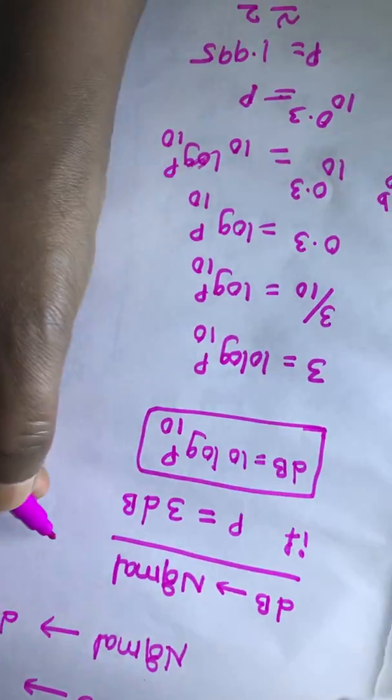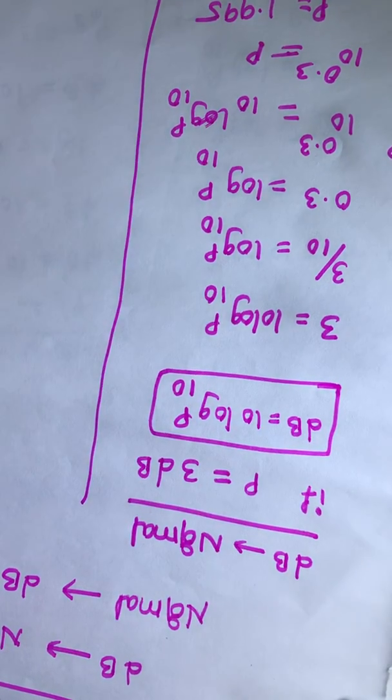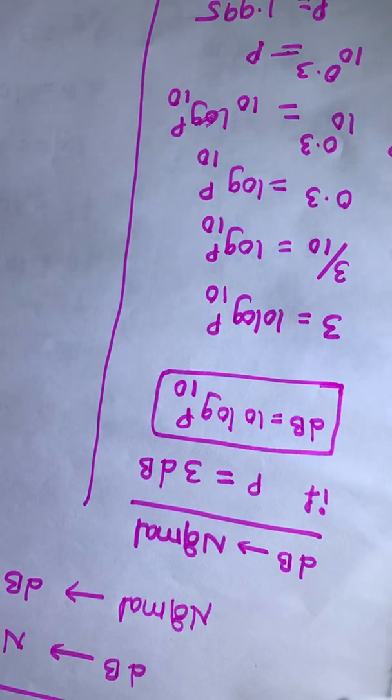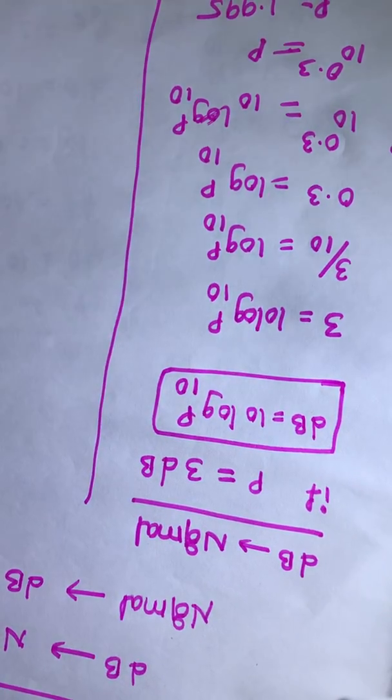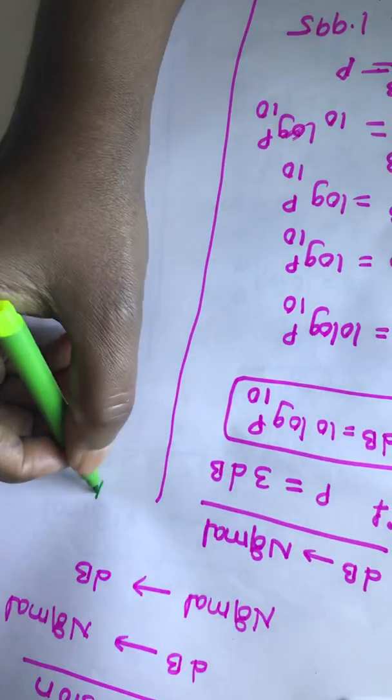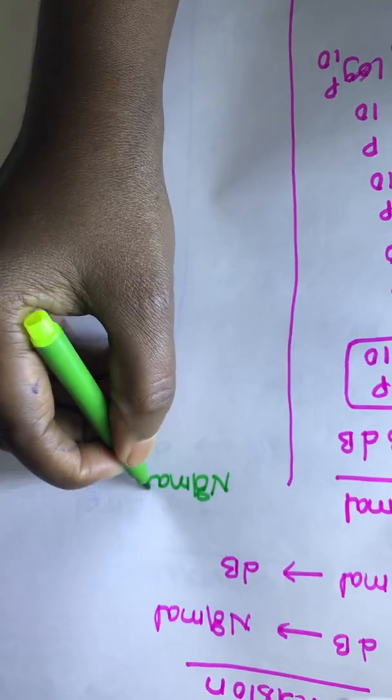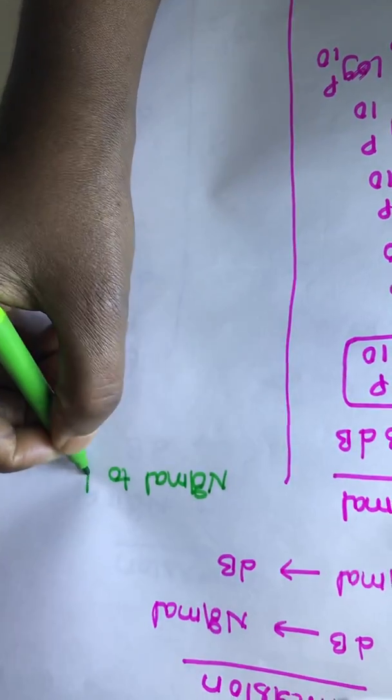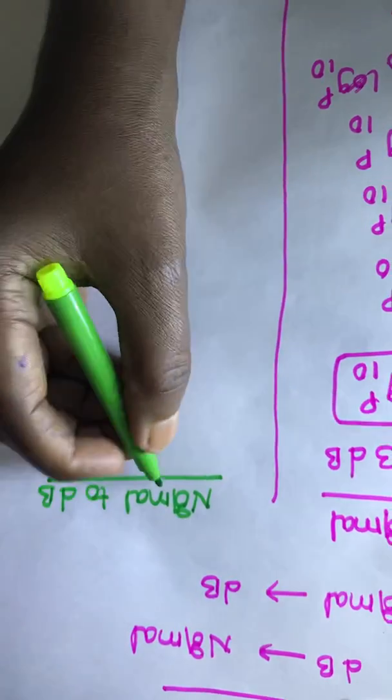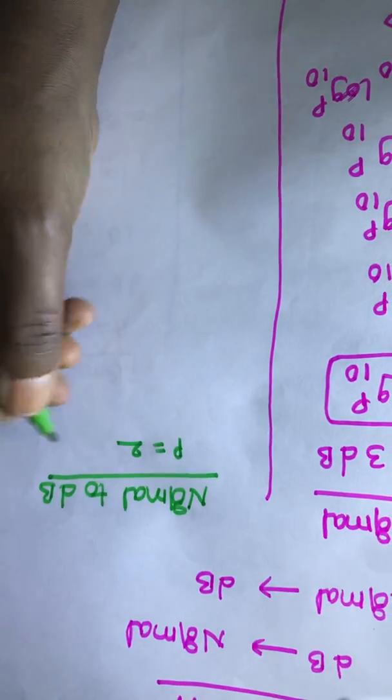Now we will see how to convert from normal to dB value. They gave normal value is 2, normal power is equal to 2. Now we need to convert it into dB.